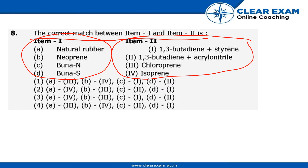We know that natural rubber is known as isoprene, and neoprene is known as chloroprene. Buna-N is known as 1,3-butadiene plus acrylonitrile, and Buna-S is known as 1,3-butadiene plus styrene.